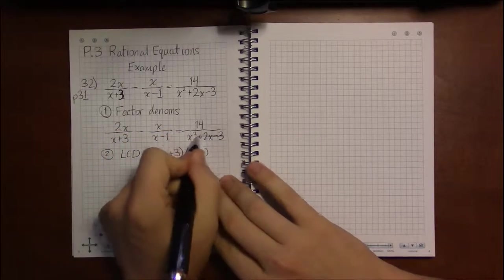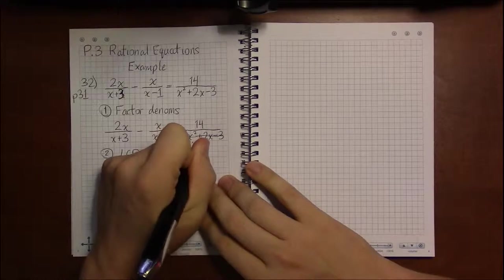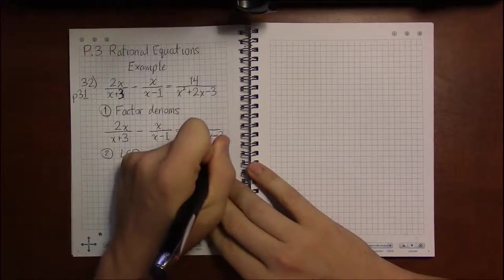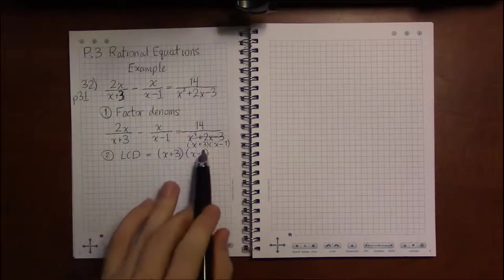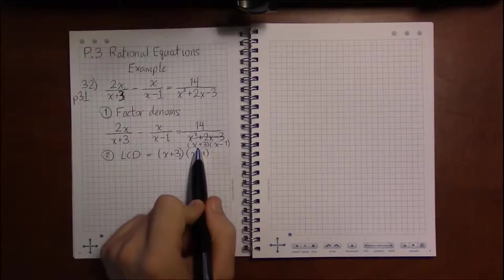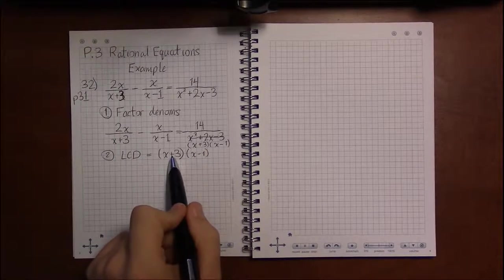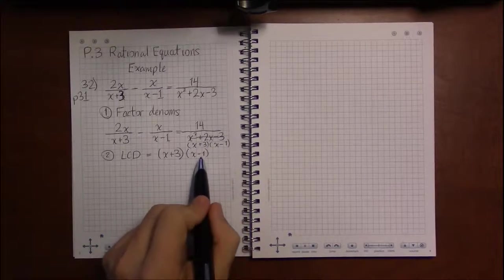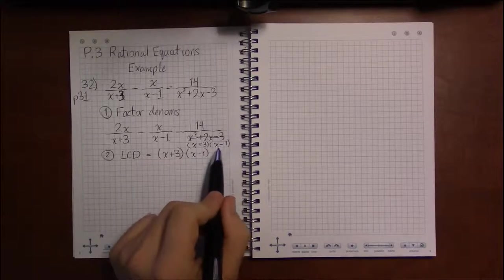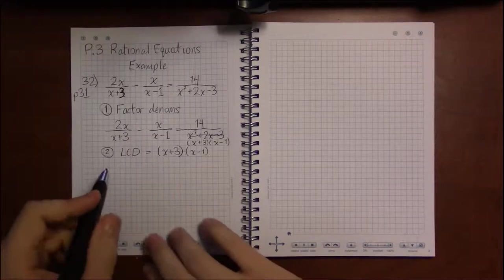And I conveniently did not do the thing I was supposed to do, which is factor this last denominator. It's going to be x plus 3 times x minus 1. x plus 3 in the denominator, we've got an x plus 3 in the LCD. So we've got it covered. No need to add it again. x minus 1 in the denominator, x minus 1 in the LCD. We've got this covered. So this is our LCD.